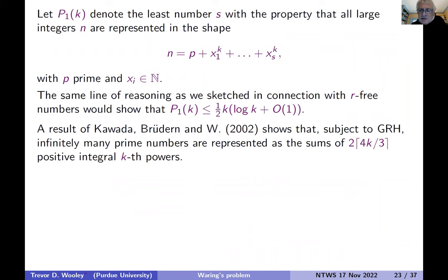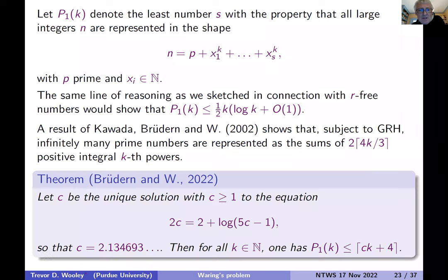So the same line of reasoning as we had on the earlier slide would show you that half k log k variables are sufficient. And we can do a bit better in the homogeneous problem. So Kawada, Brüdern and I, about 20 years ago, used some sieve methods, kind of simple ideas to get roughly eight-thirds of k k-th powers representing different primes.